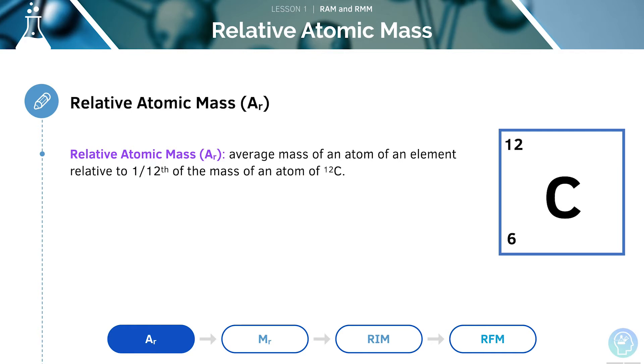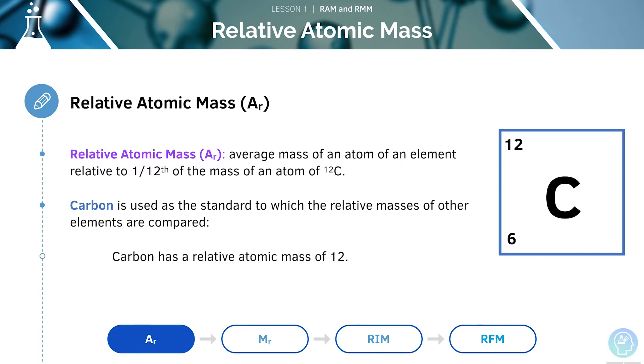The relative atomic mass is the average mass of an atom of an element relative to one-twelfth of the mass of an atom of carbon-12. Carbon is used as the standard to which the relative masses of other elements are compared, and it has a relative atomic mass of 12.